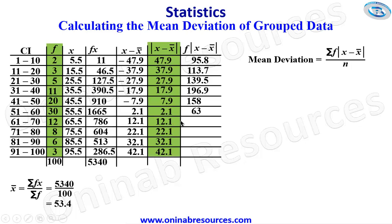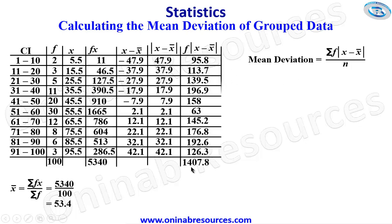Continuing: 12 times 12.1 gives 145.2; 8 times 22.1 gives 176.8; 6 times 32.1 gives 192.6; 3 times 42.1 gives 126.3. Summing all f times absolute value of x minus x-bar gives 1407.8. Substituting into the mean deviation formula: 1407.8 over 100 gives us 14.078.